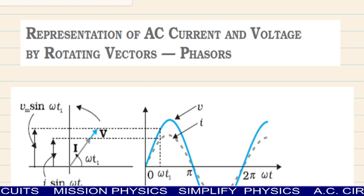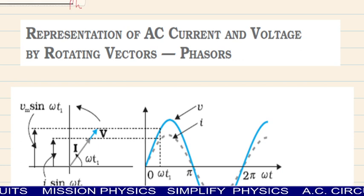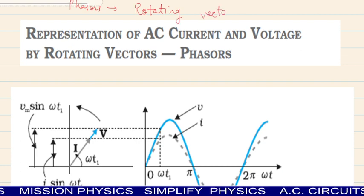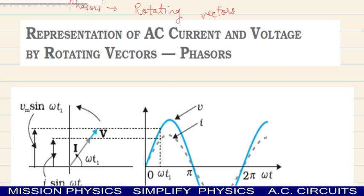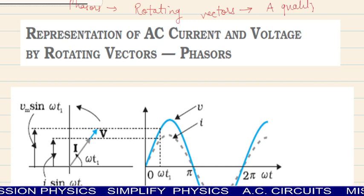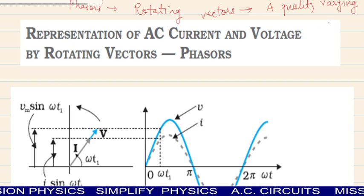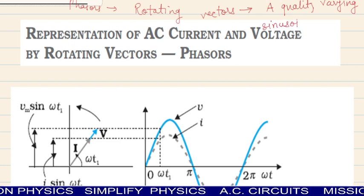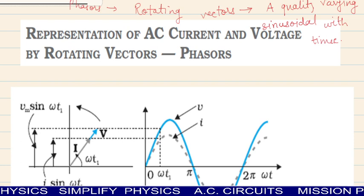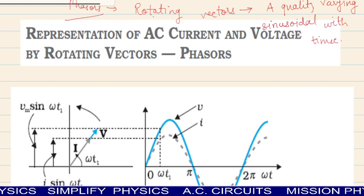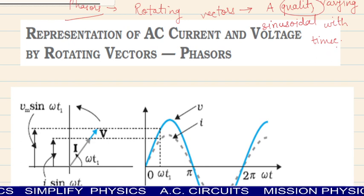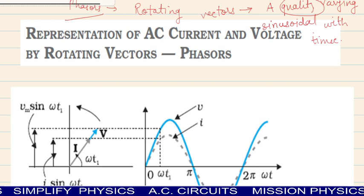So first thing: what are phasors? Phasers are the rotating vectors. Phasors are the rotating vectors that represent a quantity which is varying sinusoidally with time — this is called a phasor. Ye aapke paas phasors ki basic definition hai. Phasors woh rotating vectors hain jismein ek quality time ke saath-saath sinusoidally change ho rahi hai.